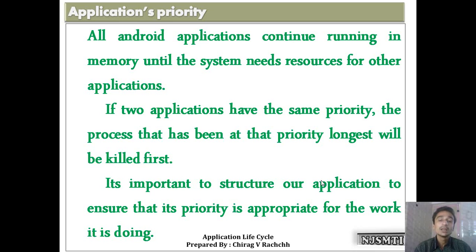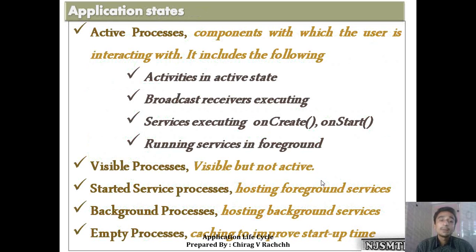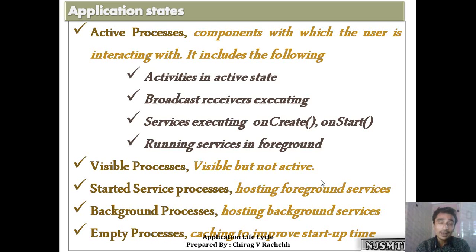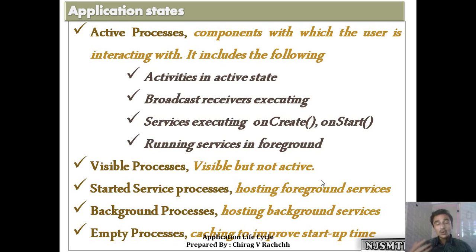It is also important to note that an application's priority should be appropriate according to the kind of work happening inside it. Application states: an application's state is formed by its activities, services, and in short its components. Active processes are components with which the user is currently interacting — meaning the application is running and some screen or activity is in front of the client.